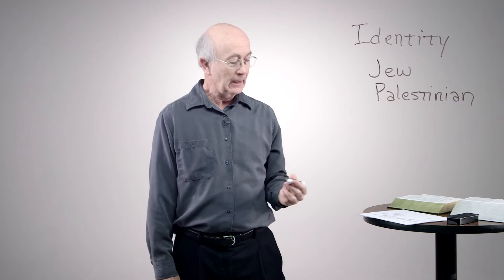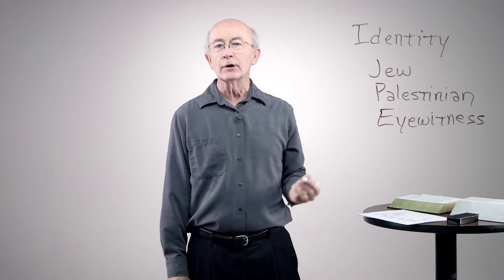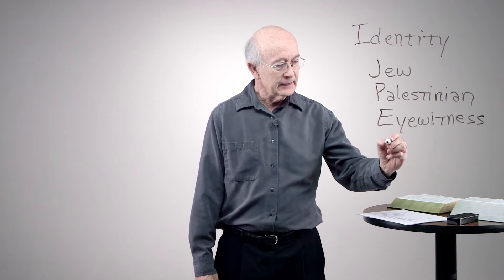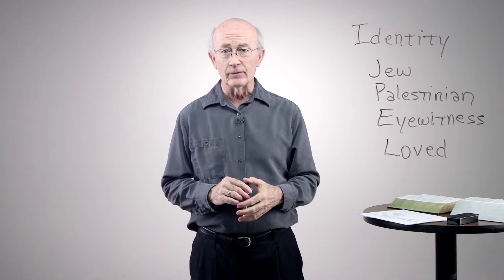In addition to being all of that, he is also an eyewitness. He was there. He saw things happen. Not just any Jew, not just any Palestinian — he is an eyewitness. And then most of all, he is the disciple whom Jesus loved. As you go through the Gospel of John, you find that the author refers to himself that way several times, but never names himself.